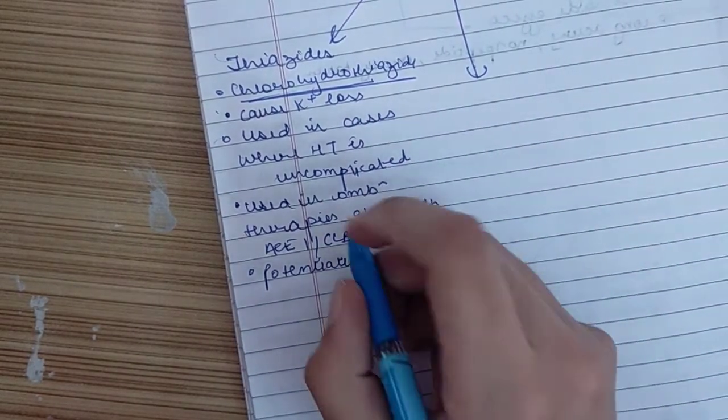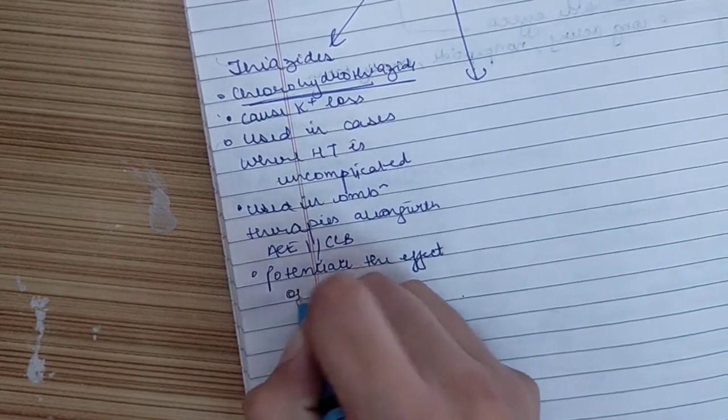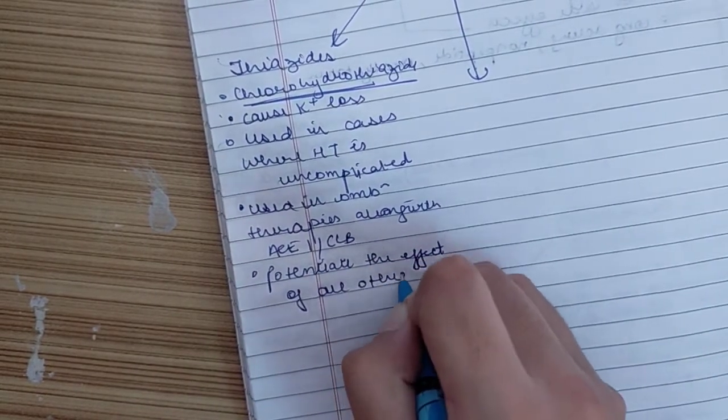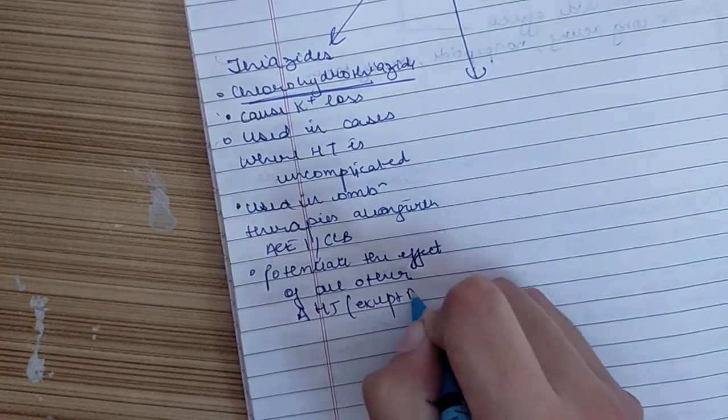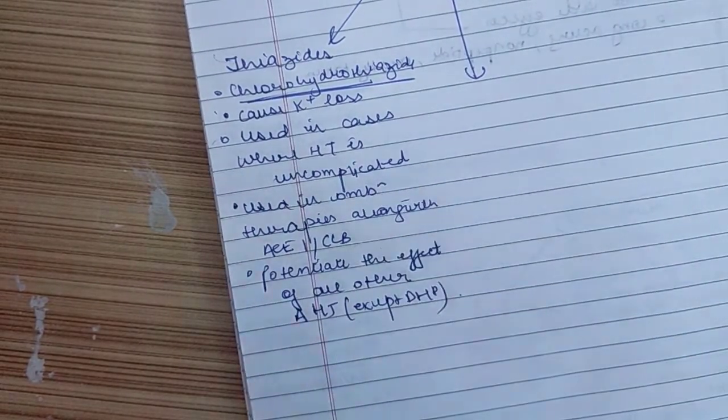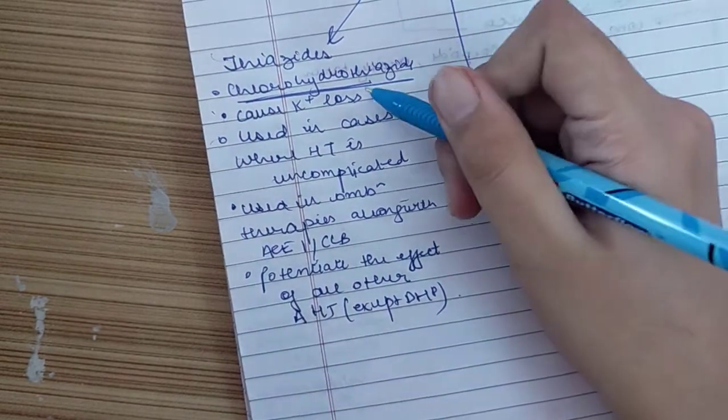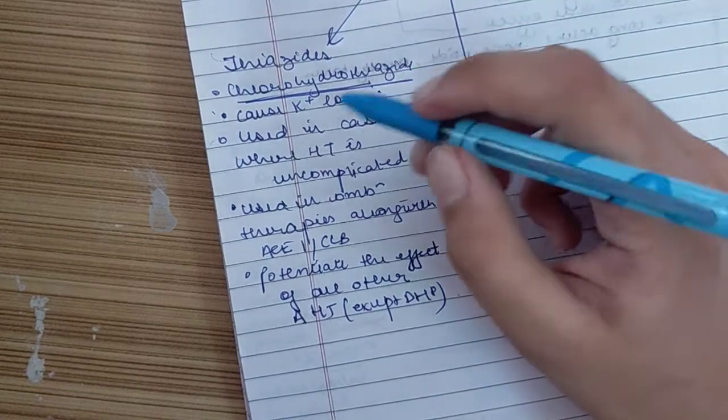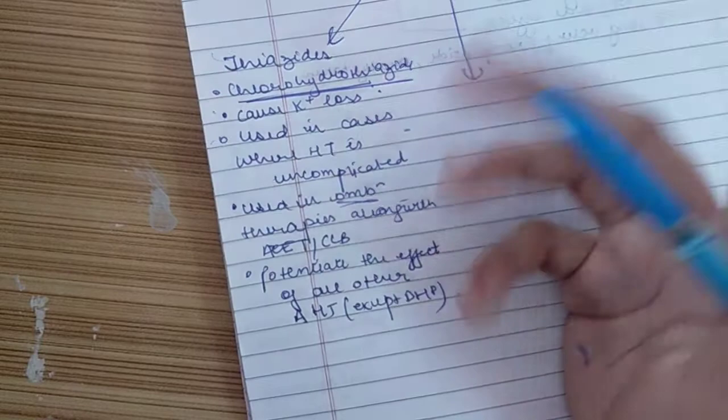Thiazides potentiate the effect of all other antihypertensives except dihydropyridines, which includes verapamil. Thiazides can cause potassium loss, so they can be used in combination therapy, which is an important use we'll see later.